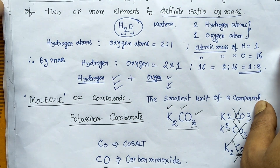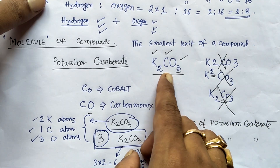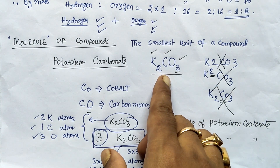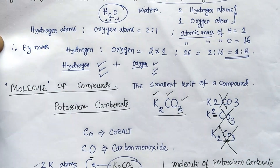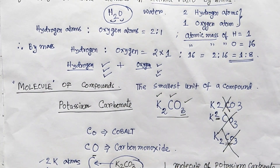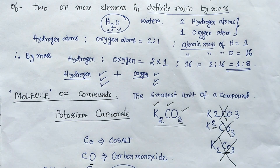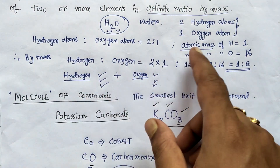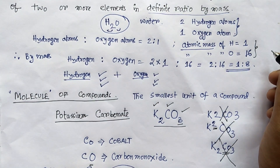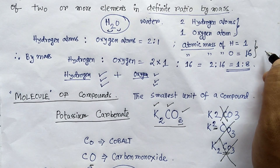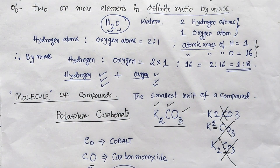A chemical compound is a pure substance formed by chemical combination of two or more elements — in the case of potassium carbonate, three elements combine. We also learned that water contains two hydrogen atoms and one oxygen atom, with hydrogen-to-oxygen atomic mass ratio of 1:8. Atomic masses can be found in literature; in higher classes you will learn how to calculate them. Thank you, children.